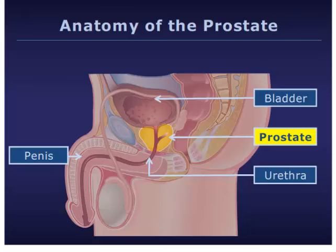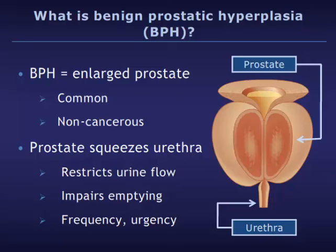A man's prostate enlarges or grows bigger as he ages. This common non-cancerous enlargement of the prostate is called benign prostatic hyperplasia, or BPH for short. The growing prostate can cause trouble when it tightens around the urethra.